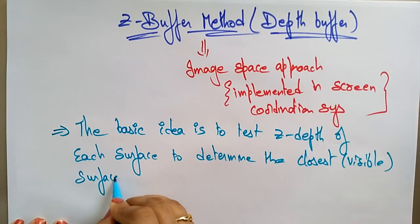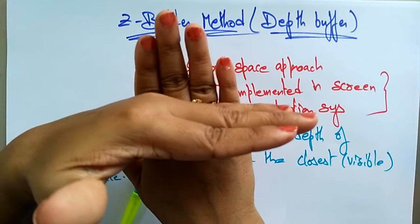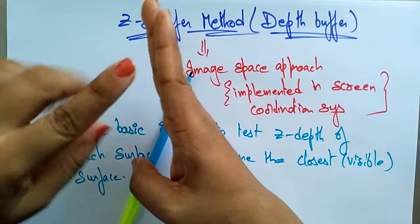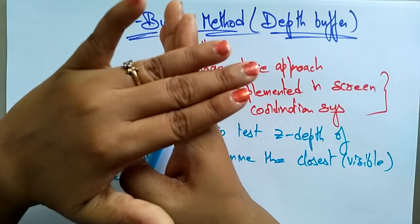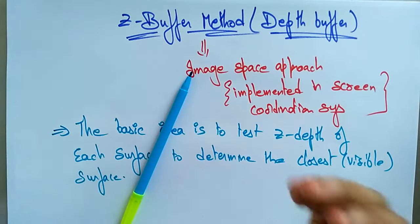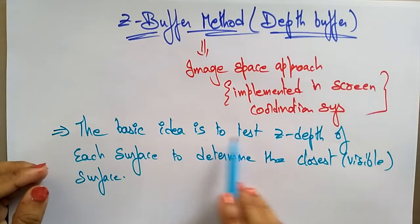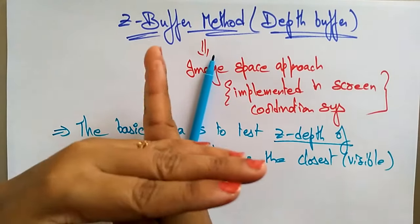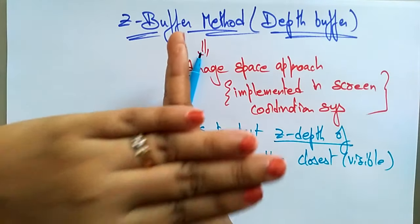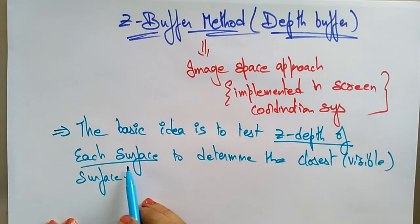One thing I have to mention: in back-face detection, if two objects are overlapping, the back side you are not able to see — only the front part is visible and the back side is cut off. That is a drawback of back-face detection. The Z-buffer overcomes that drawback. The basic idea here is to test the Z-depth of each surface. I'm taking two surfaces — like my left hand and right hand — and calculating Z-depth for each to determine the closest visible surface.